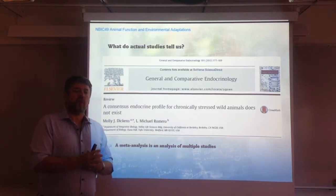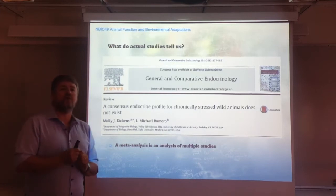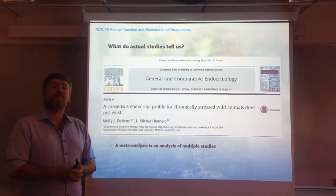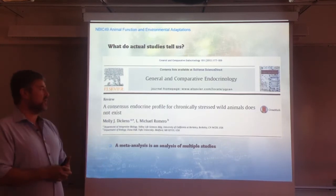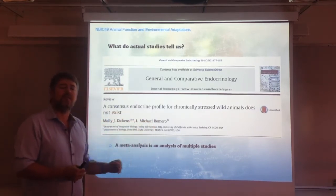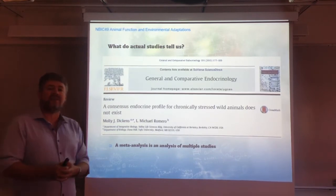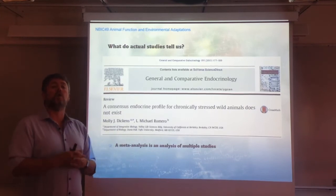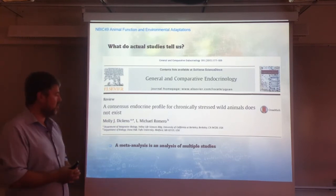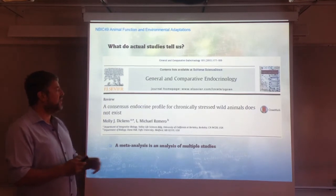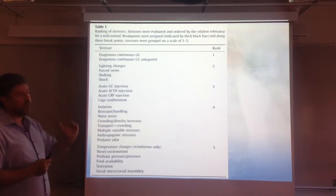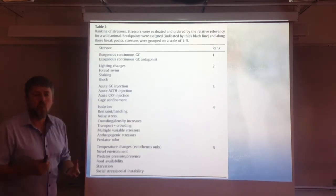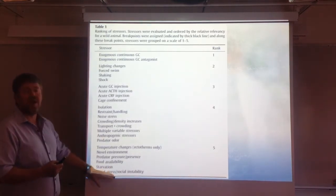Moving on, after this first part, I want to take another discussion about how we can generalize the existence or increase in glucocorticoid levels with chronic stress. This is what Dickens and Romero have done in a particularly nice meta-analysis article — a study based on other studies. They collected studies looking at the glucocorticoid stress response in chronic stress situations and analyzed them against each other. The study considered different types of stressors, ranked from minimally relevant — meaning the stressor is poorly relevant in wild conditions — to more relevant wild conditions.